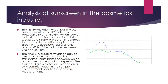Analysis of sunscreen in the cosmetic industry can also be done by scanning. The first formulation, visualized in blue, absorbs most UV radiation between 280 and 350 nanometers, indicating it would be a stronger protector. In contrast, the second formulation, depicted in green, absorbs only around 60% of the radiation between 280 and 350 nanometers. The final sunscreen formulation can be measured directly using two UV transparent glass plates between which a thin layer of the product is spread, and the squeezed glass plates are placed on a solid sample holder in the sample compartment prior to spectrum measurement.